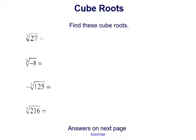Let's try finding different cube roots and put this all together. We have the cube root of 27 — that's asking what number cubed equals 27. We also have the cube root of negative 8. If you're thinking of square roots, you might say that's not okay, but this is a cube root, so it's fine. We can find what number multiplied by itself three times equals negative 8.